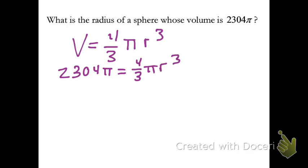All right, one thing I could do right away to make my life easier is to divide both sides by π. That's just going to cancel it out. Then you could divide both sides by 4/3 too if you wanted. I'm going to do it in two steps and multiply both sides by 3 to emphasize getting rid of that 3. Now we have 3 times 2304, which would come out to be 6912, and then that would equal 4r³.